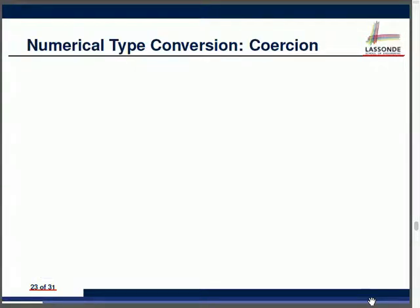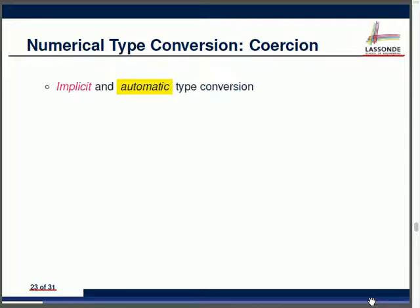Now the most confusing topic: there are two kinds of type conversion. One occurs automatically — called coercion or promotion. The other occurs only manually — called casting. Let's understand coercion first. It's implicit, meaning it's done for you under the hood automatically.